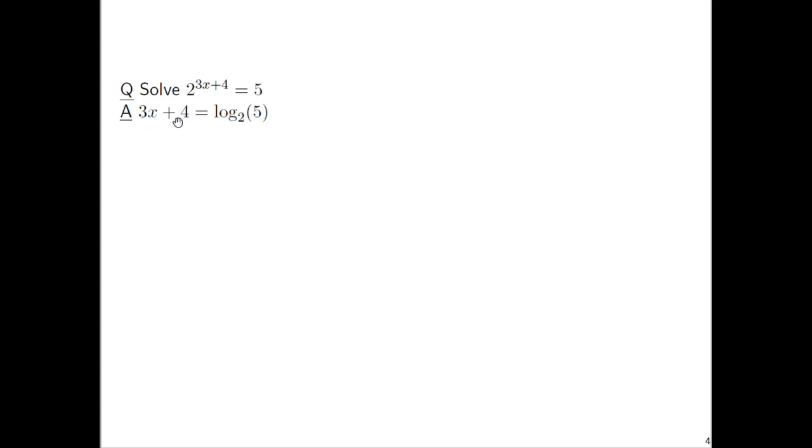So when solving this equation, 3x plus 4 equals this number. Think of what you do if you were to solve 3x plus 4 is equal to 100. Subtract 4 on both sides. This won't simplify any further. So we just write log base 2 of 5 minus 4. That's fine. Just leave it like that. There's no point doing any calculator work here, and then just divide both sides by 3. So you have x is equal to log base 2 of 5 minus 4 all over 3.